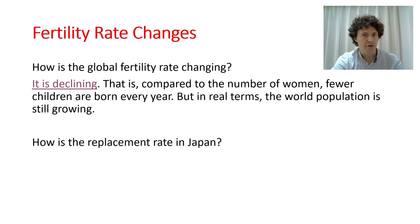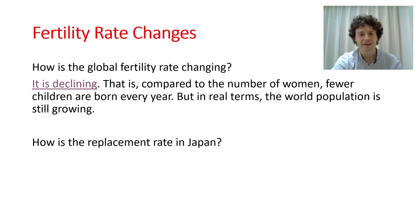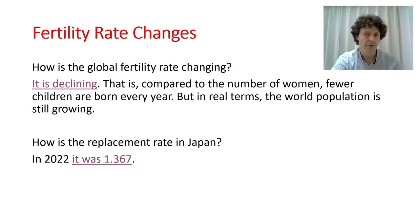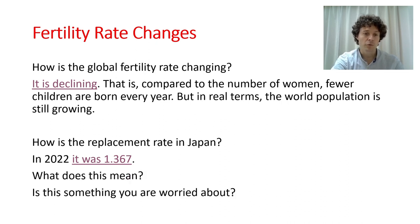How is the replacement rate in Japan? Japan is the country most often discussed in this context, but the Japanese trend is pretty much the same as in all high-income and middle-income countries. In 2022, the replacement rate in Japan was 1.367 — very low, far below the 2.1 required to keep population steady. So should we be worried about this?